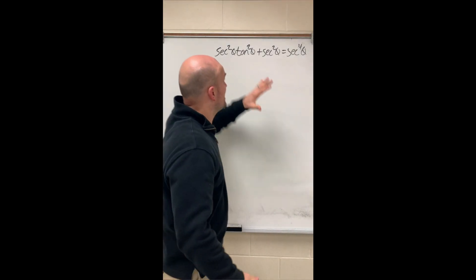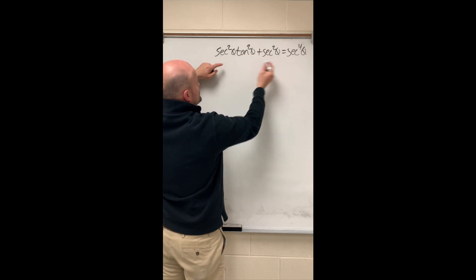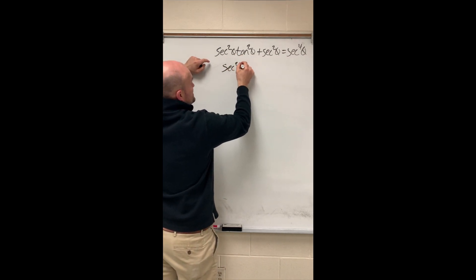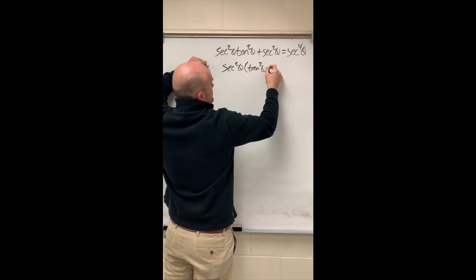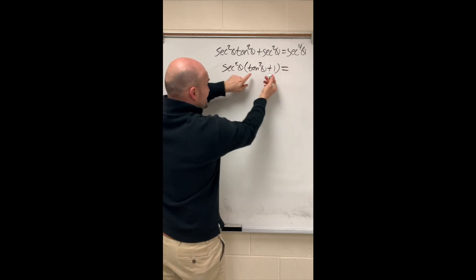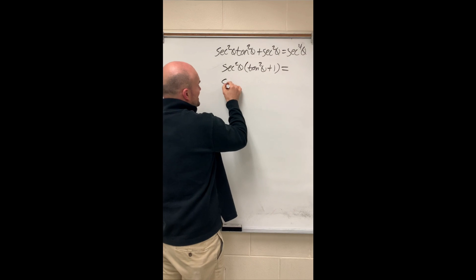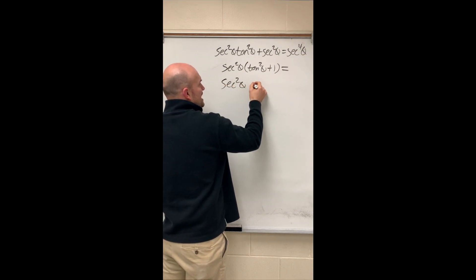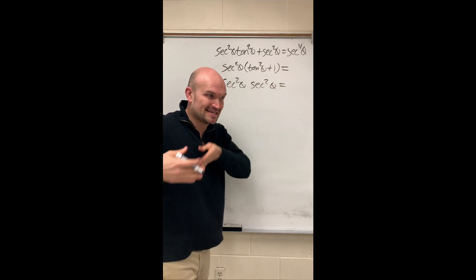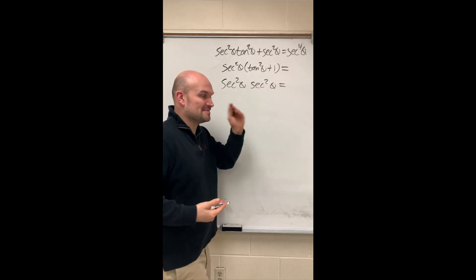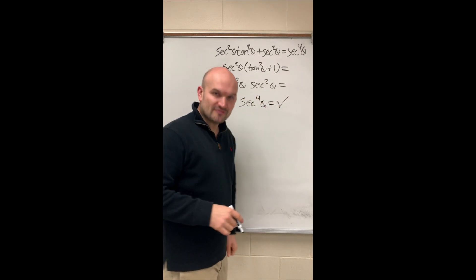When you have multiples of trigonometric functions, look to factor them out. Here I have secant squared of theta twice, so I'm going to factor out the secant squared of theta, and that's going to leave me with tangent squared of theta plus one. Now tangent squared of theta plus one is my Pythagorean identity, giving me secant squared of theta times secant squared of theta. Secant squared times secant squared is secant to the fourth of theta. Verified.